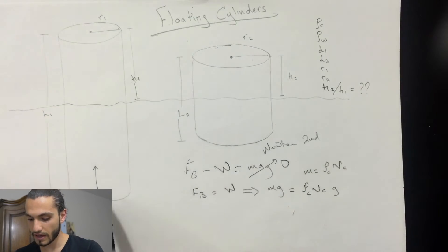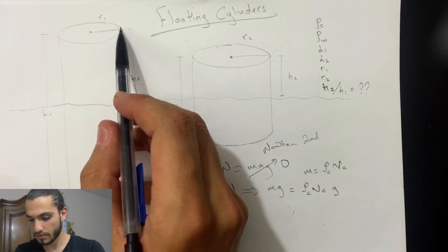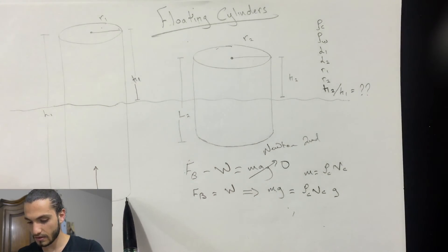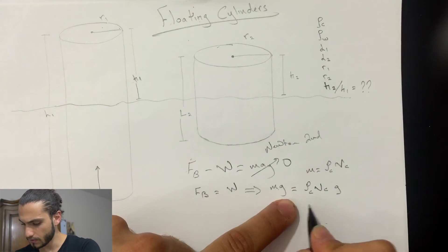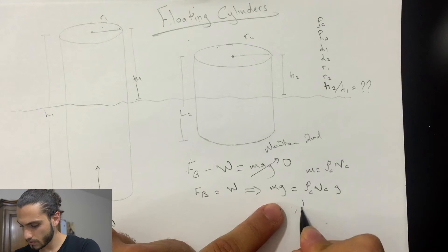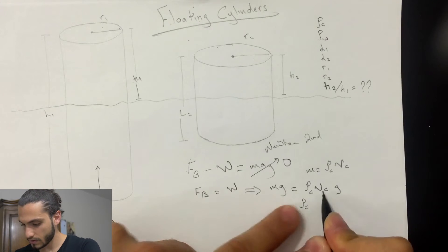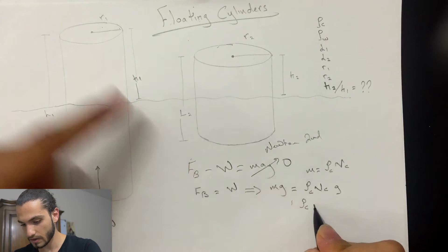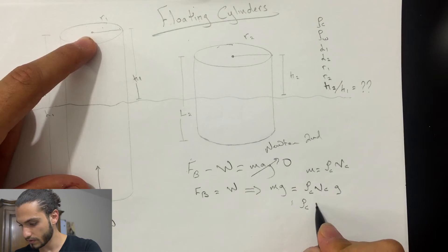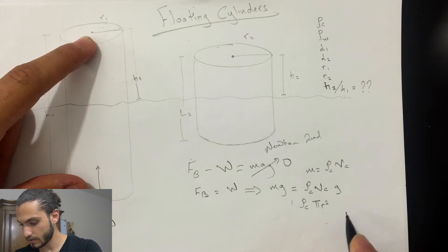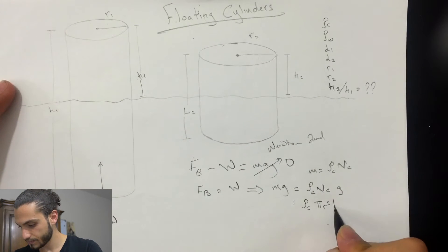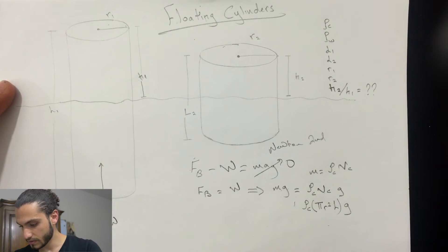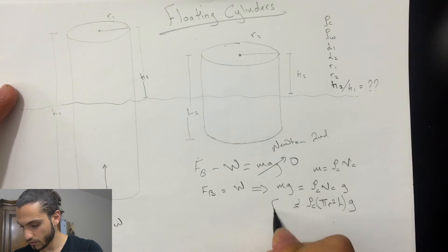So this will be equal to rho c times g, and the volume of the cylinder is just the area multiplied by the length. So rho c, and the area of a circle is pi r squared, the volume times L and times g.